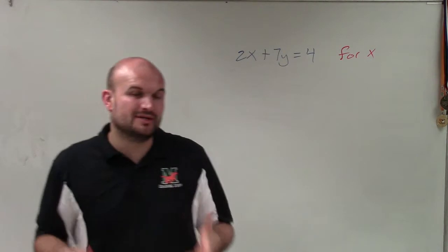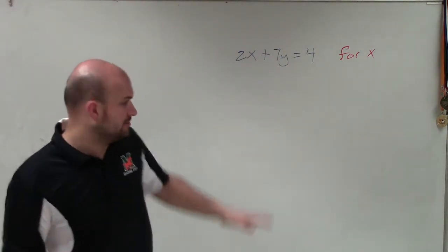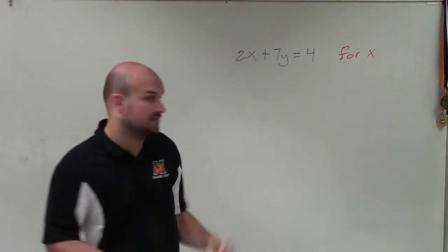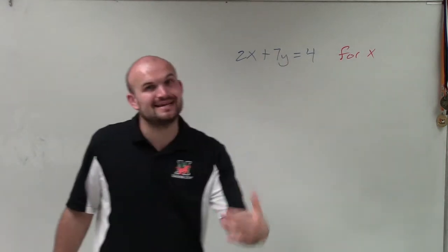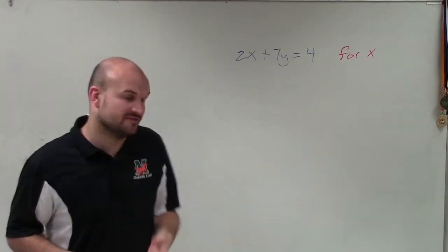So again, when we're solving for x, what we want to do is isolate our variable x. So we need to look at our x and say, all right, what is happening to the variable? You can see that the variable is being multiplied by 2, as well as being added by 7y. So we need to undo everything that's happening to the variable.